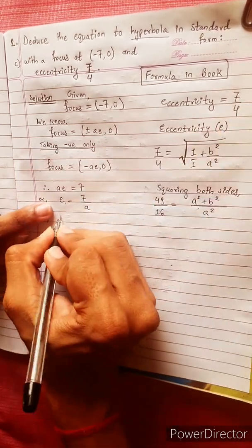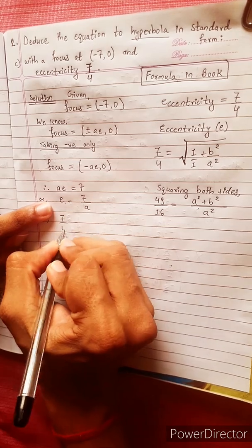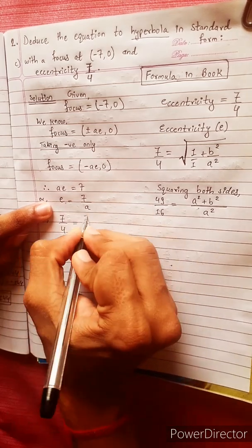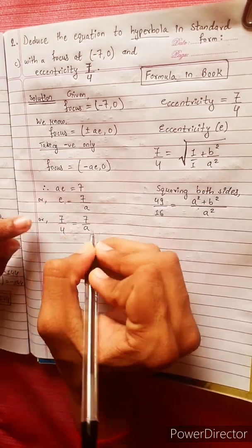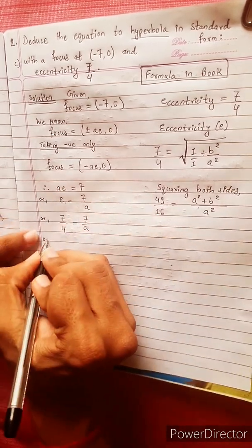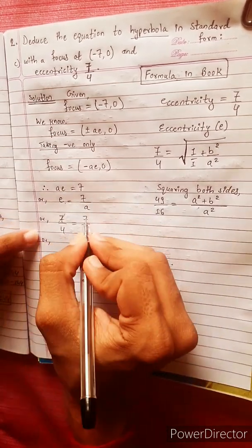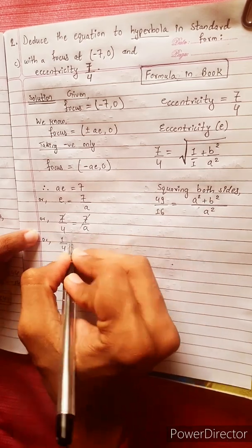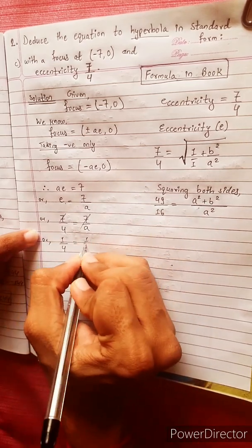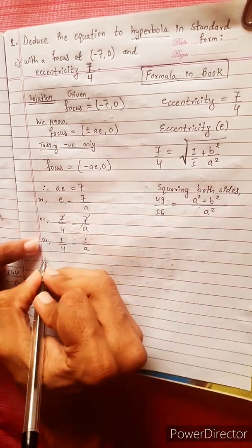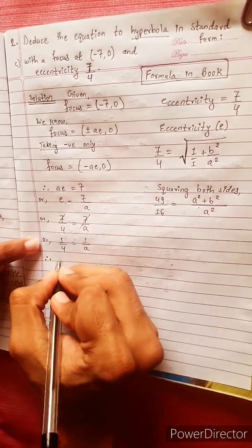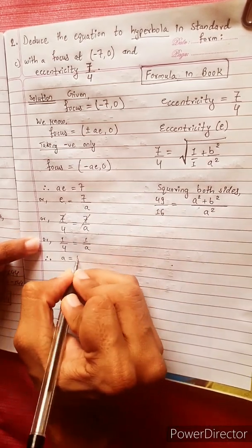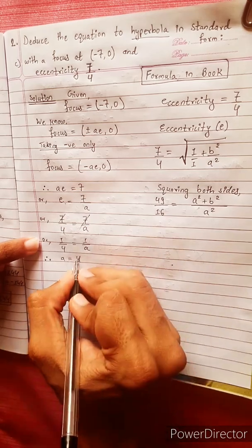E equals 7 divided by 4. Setting 7 by a equal to 7 by 4: 1 by a equals 1 by 4, therefore a equals 4. The value of a is 4.